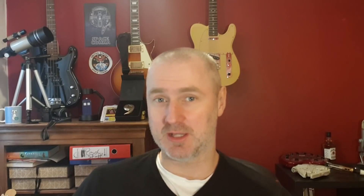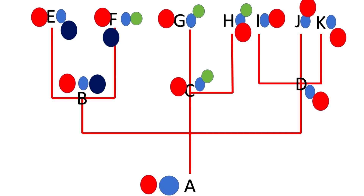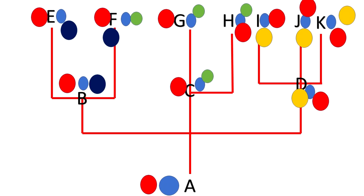Thirdly, when a second type of ERV is introduced — let's say at point C — we would only predict to find those same insertions in the same locations in organisms G and H. If we found it in any other organism in the tree, it would be direct evidence against evolution. But we never, ever see that. As we add more ERV integrations, they all follow this same pattern perfectly, with no contradictions whatsoever.